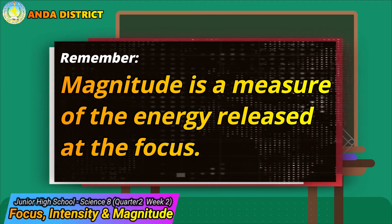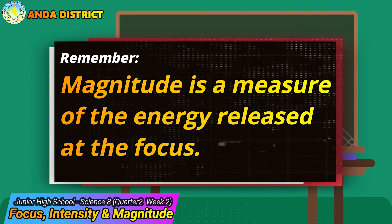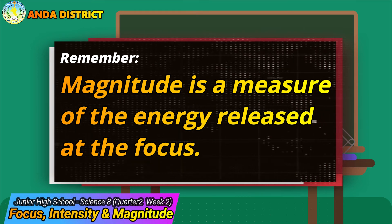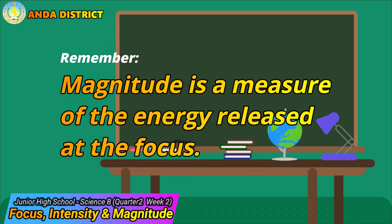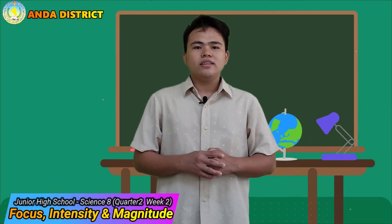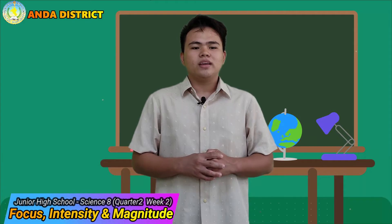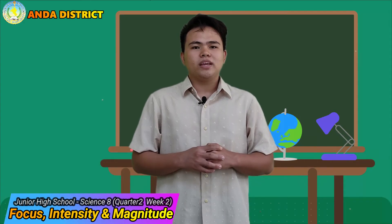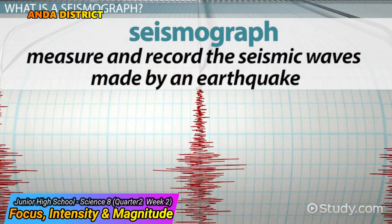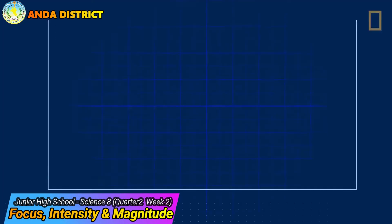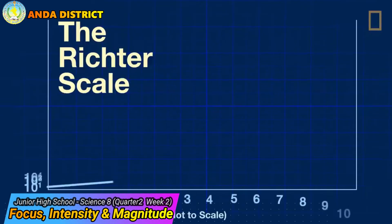Magnitude is a measure of the energy released at the focus. This measurement is estimated from seismograph readings and is usually expressed by the Richter scale.